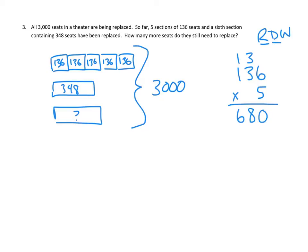So actually here, let me just go ahead and draw this. So this is 680 seats. Now I think I understand our problem. 680 seats have been replaced plus 348 seats have been replaced. That leaves all the remaining seats right here, and those all come to a total of 3,000. So I think we need to add the 680 seats from the 348 seats.